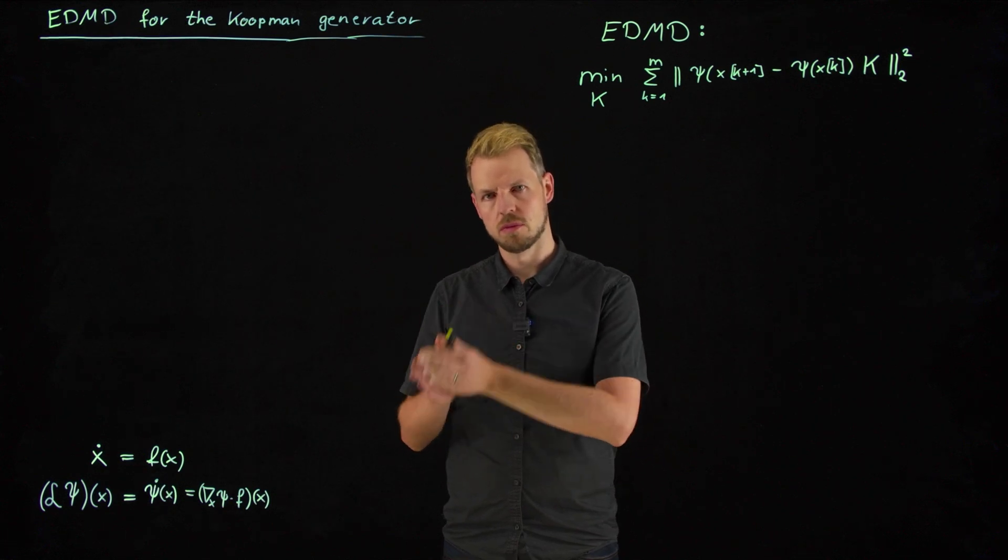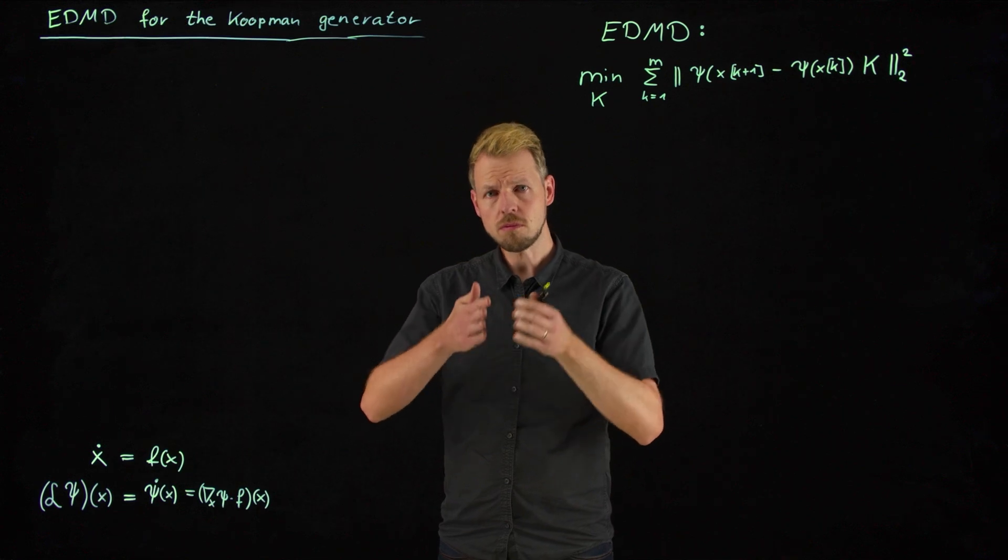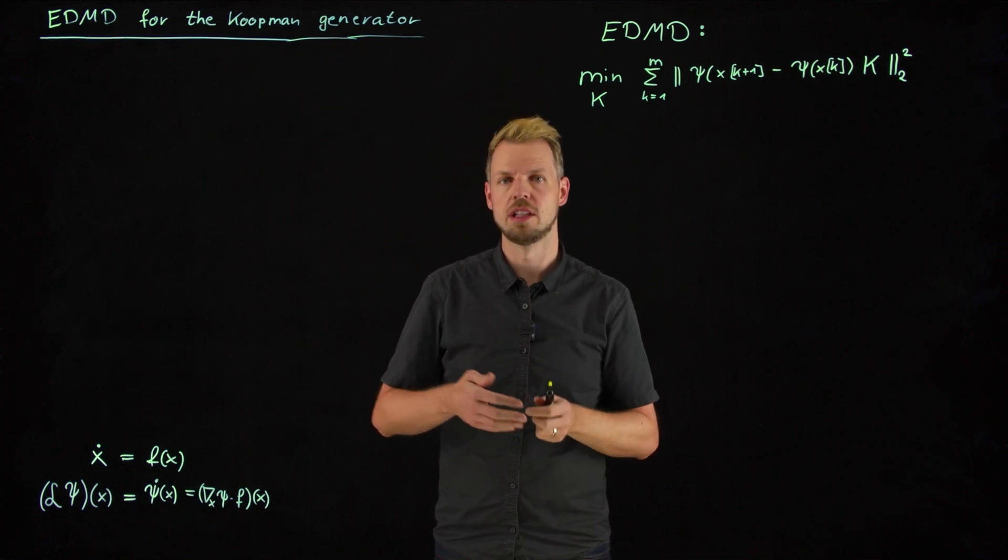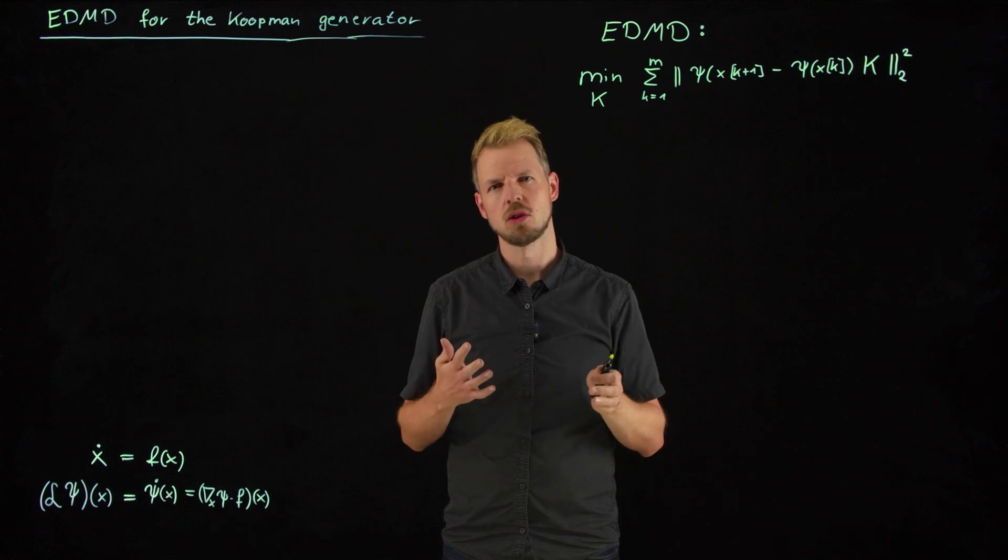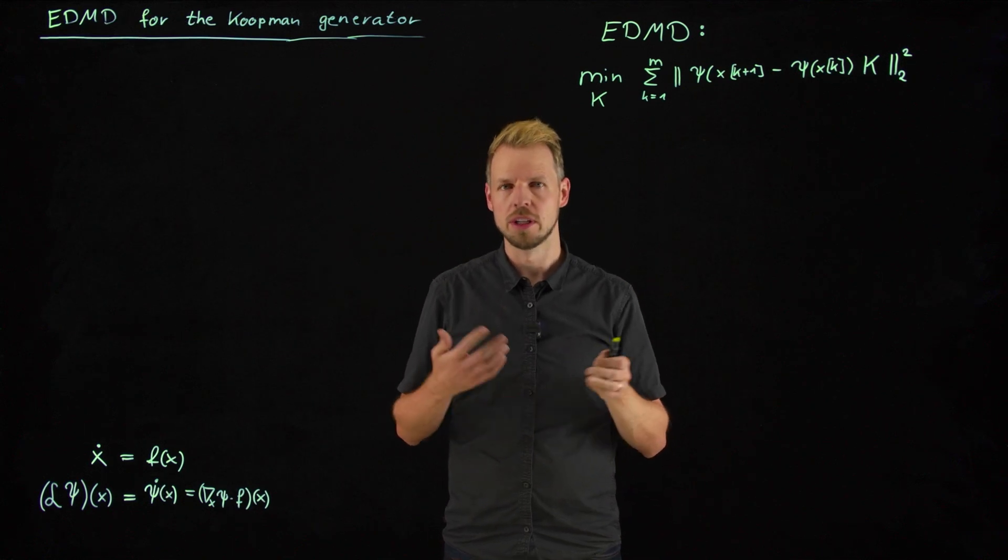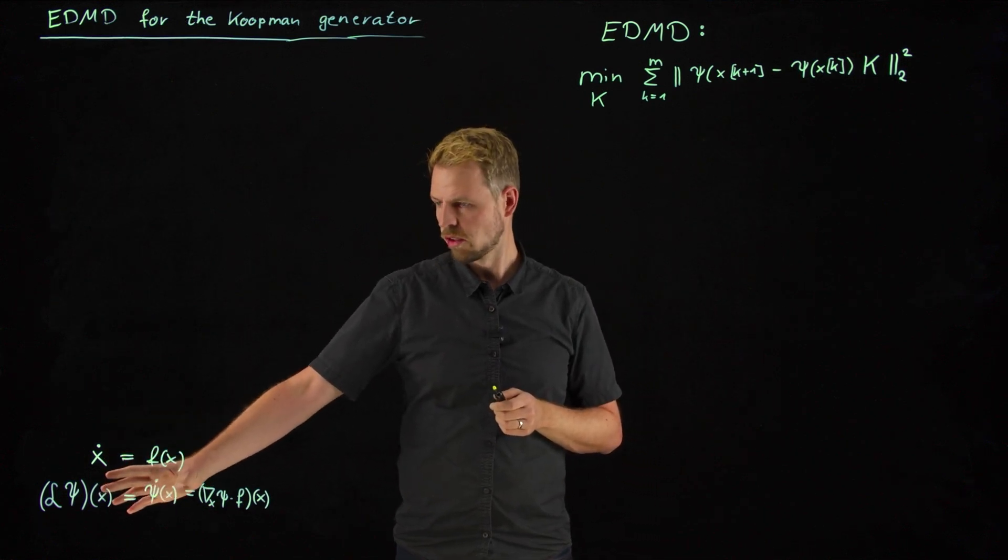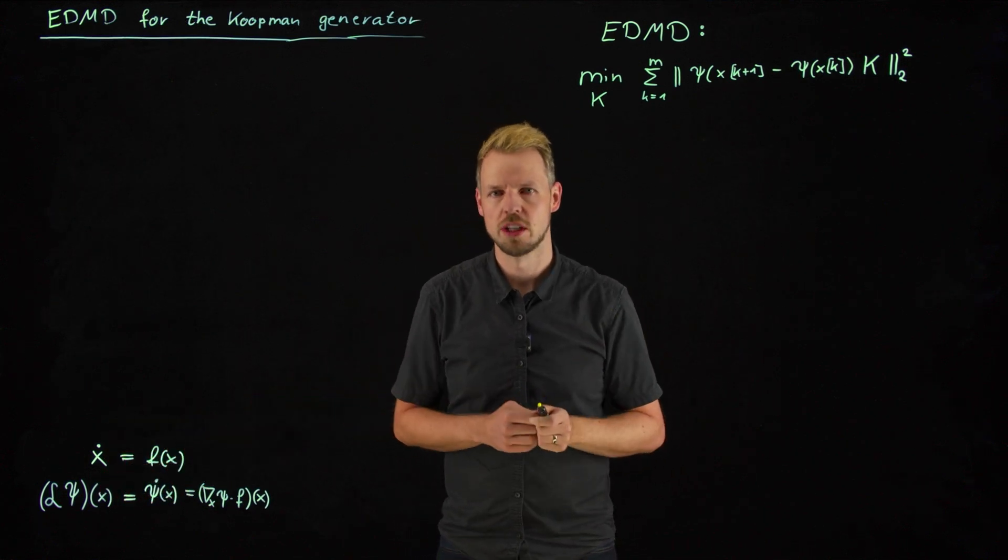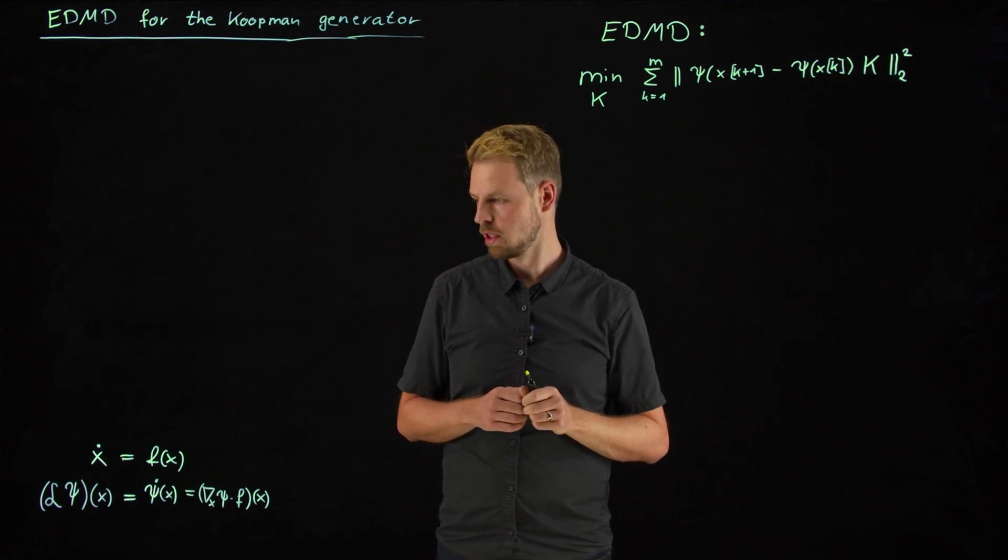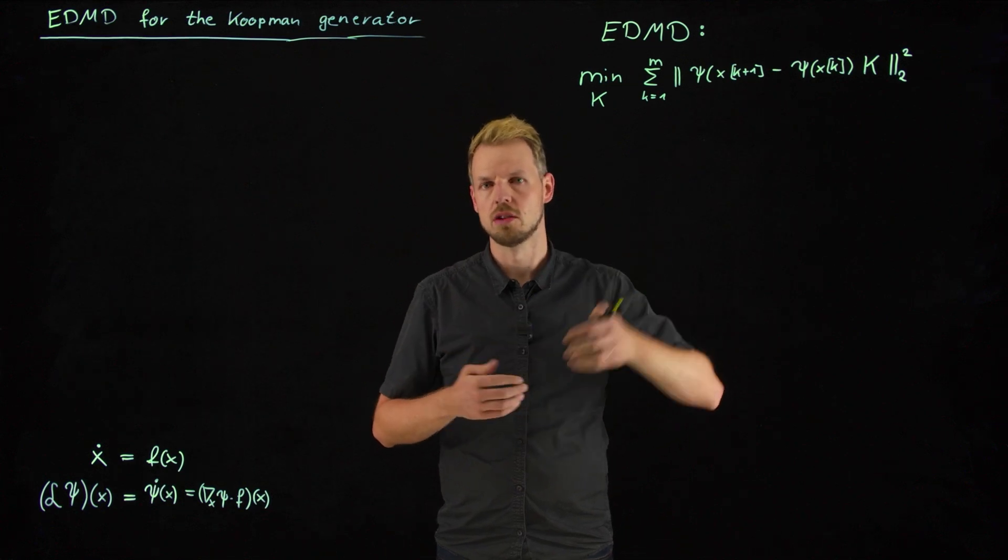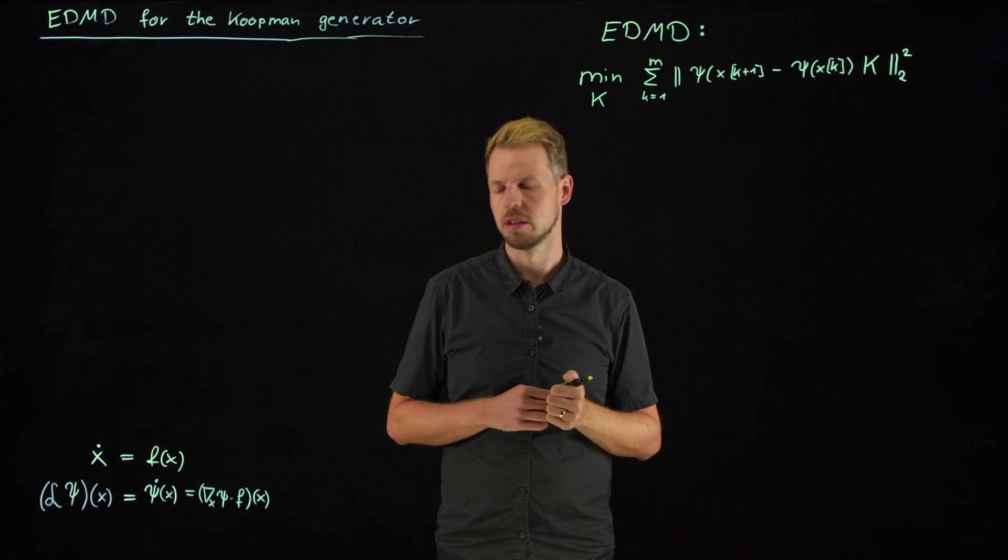We have seen that if we consider sequences of measurements that have a particular time step tau, then this time step obviously has an impact on the particular Koopman operator approximation. And this is not often very helpful or necessary even because in this continuous time setting, the generator is, as the name suggests, the operator that allows us to generate all the other operators by simply taking the exponential multiplied by the time scale.